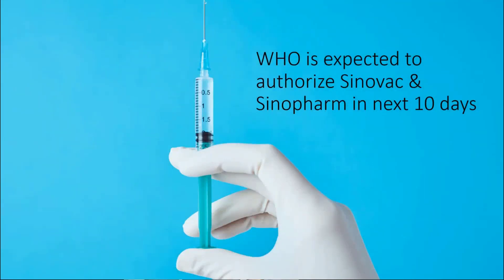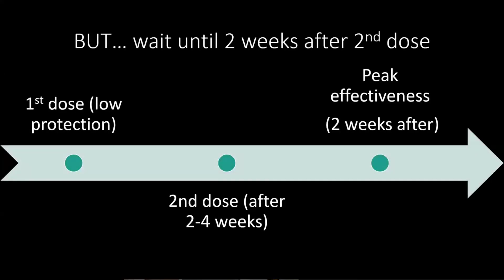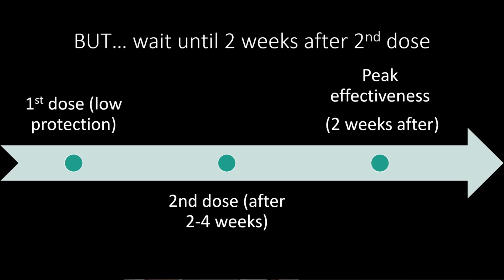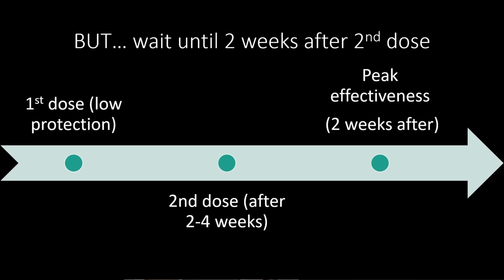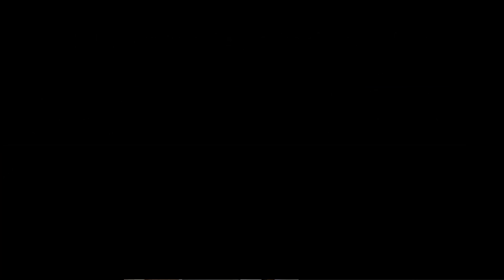The WHO is expected to give authorization to both Sinovac and Sinopharm in the next 10 days — Sinopharm by the end of this week, Sinovac next week, according to Reuters and other news sites. That would be a huge push for the credibility of these vaccines. But be aware: the first dose of Sinovac and Sinopharm has very low protection — only 3% effective after the first dose according to a Chilean study of 10 million people. It goes up to 67% after the second dose, but you need to wait a couple of weeks after your second dose to reach peak effectiveness.